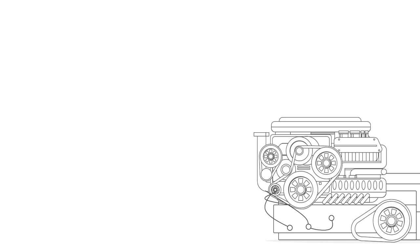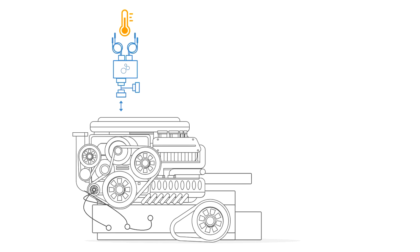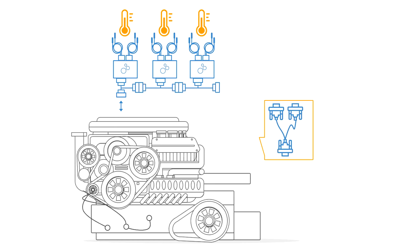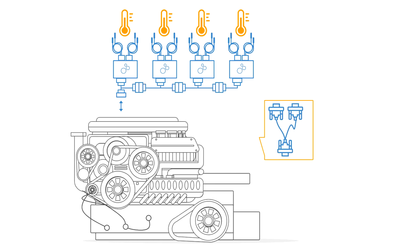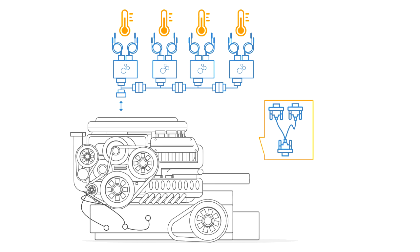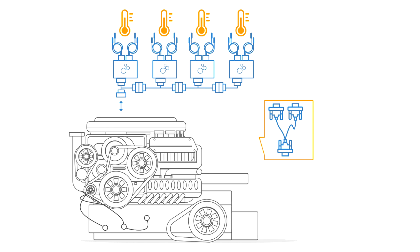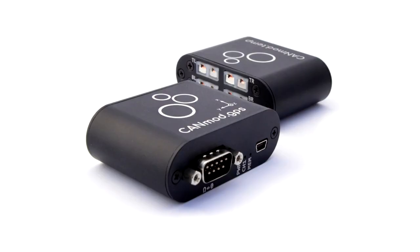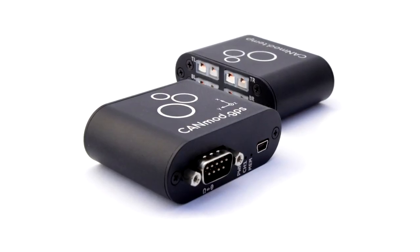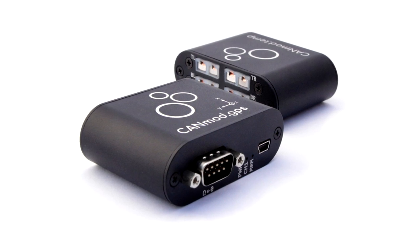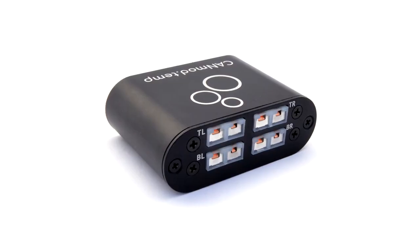If you need more than four thermocouple channels, we offer plug-and-play DB9 Y splitter cables that allow you to easily daisy-chain multiple modules. In addition, you can combine the CAN-MOD-TEMP with other sensor-to-CAN modules from the CAN-MOD series.